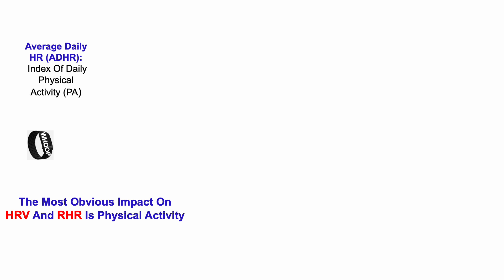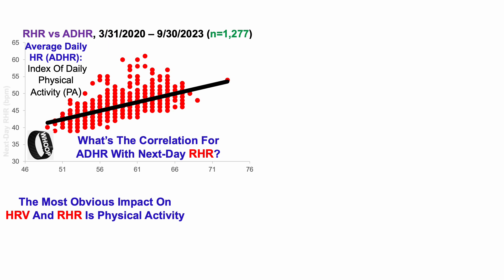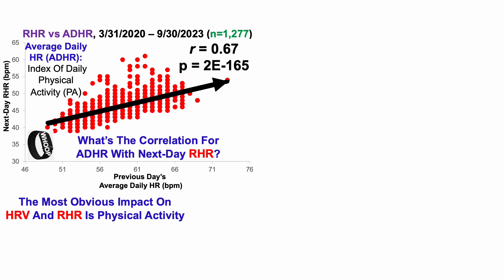WHOOP provides the average daily heart rate as an index of physical activity, so let's take a look at correlations for the average daily heart rate with next-day resting heart rate, which is what we can see here. On the y-axis, we've got the next-day resting heart rate plotted against the previous day's average daily heart rate as an index of physical activity on the X. And here we can see a significant positive correlation between the two.